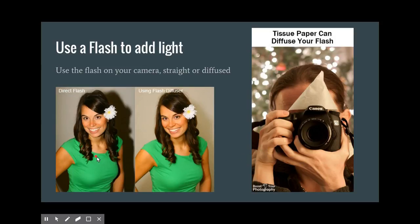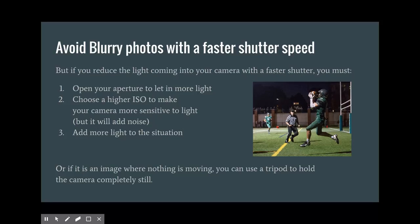If you use a direct flash — either built into your camera or a supplemental flash attached to the hot shoe — it generally looks pretty harsh. But you can diffuse your flash using tissue paper, wax paper, or something similar placed over it to soften the light, just like clouds diffuse sunlight. Milky white materials can soften the light from a flash before it hits your subject.